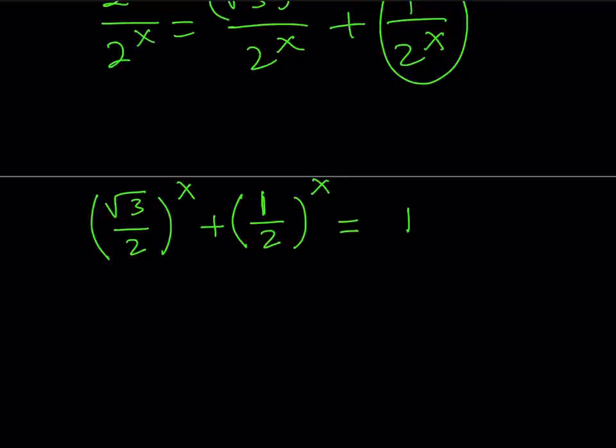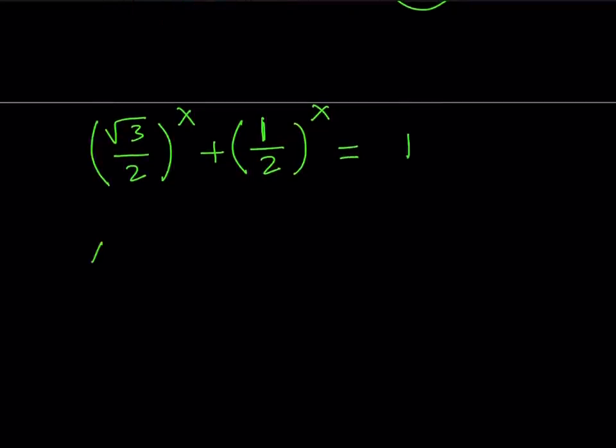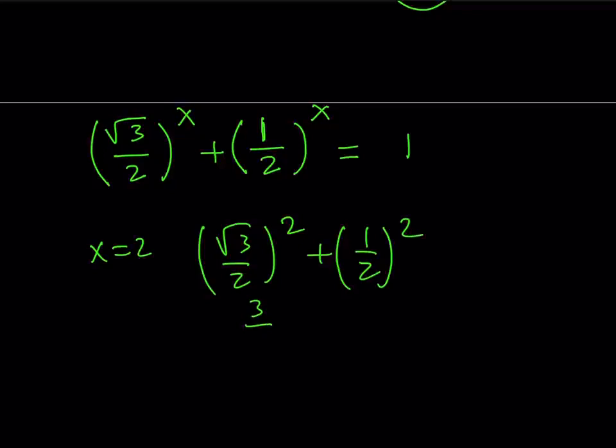What is that supposed to mean? Well, it means that the Pythagorean theorem applies here. Remember, in our geometry puzzles, we used it, but we can also use it in algebra. So, we do know that x equals 2 works. Why? Because if you square root 3 over 2, and you square 1 half, you get 3 fourths plus 1 fourth, which is equal to 1. Great. So, x equals 2 is a solution.